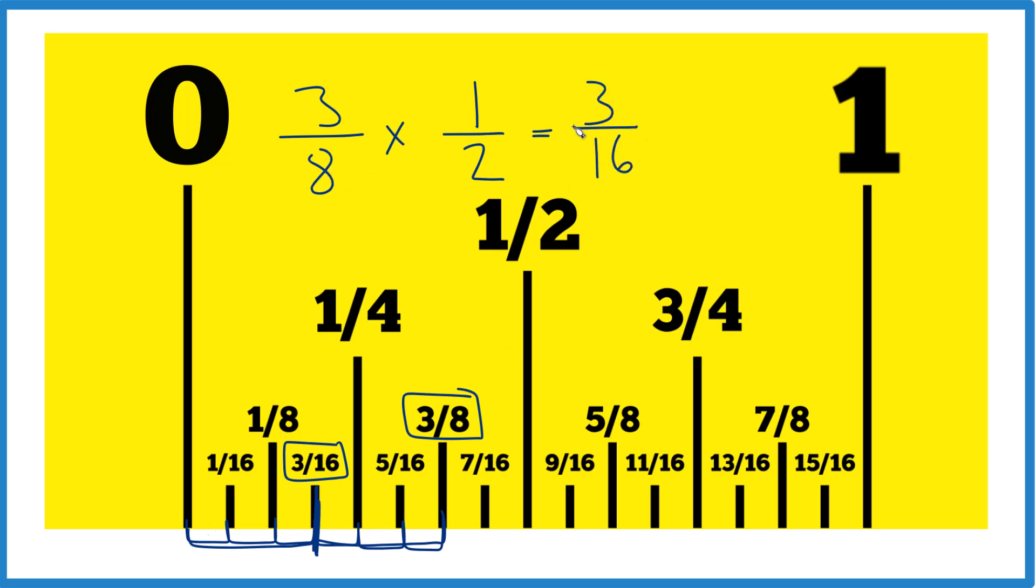Now we're just multiplying. Three times one is three, eight times two is sixteen, and three sixteenths. That's what we found before. So half of three eighths is three sixteenths. And if you add three sixteenths plus another three sixteenths you'll get three eighths.